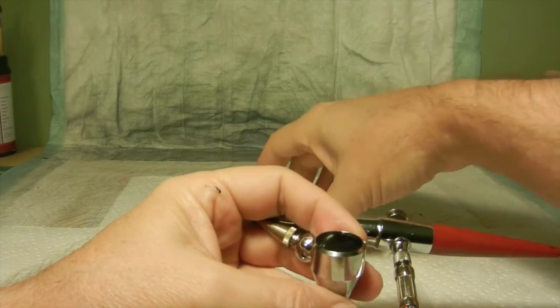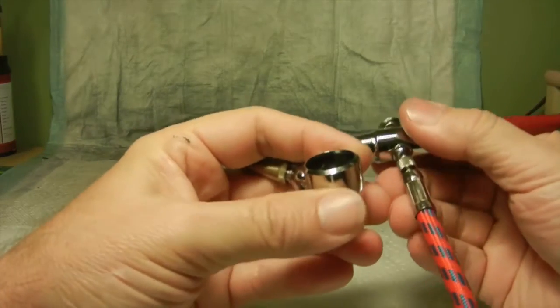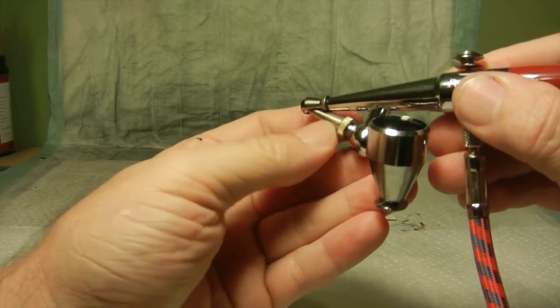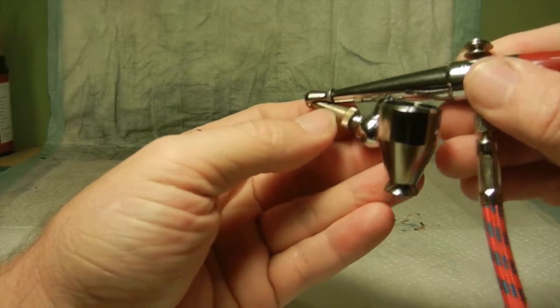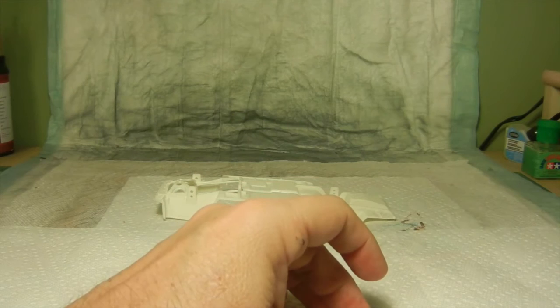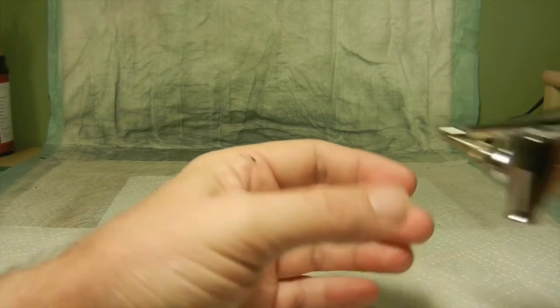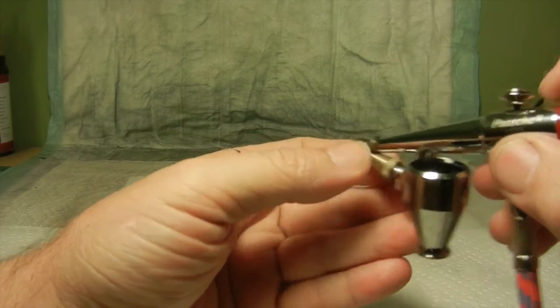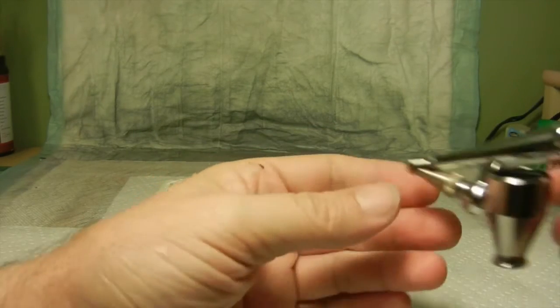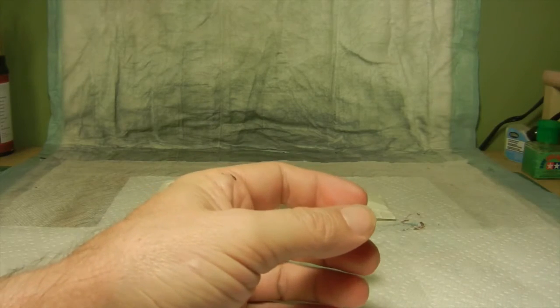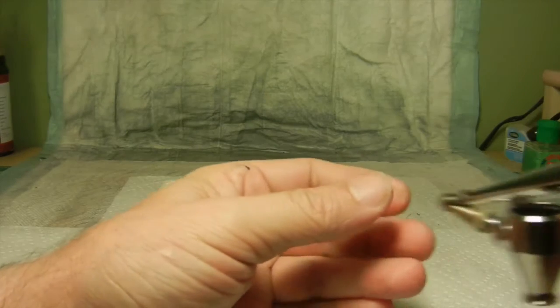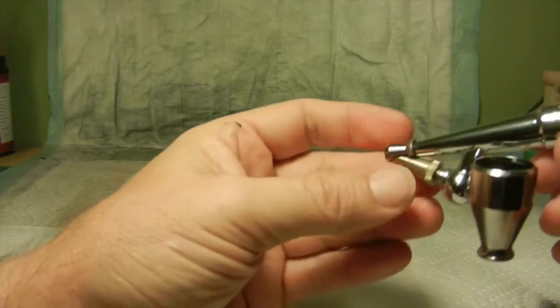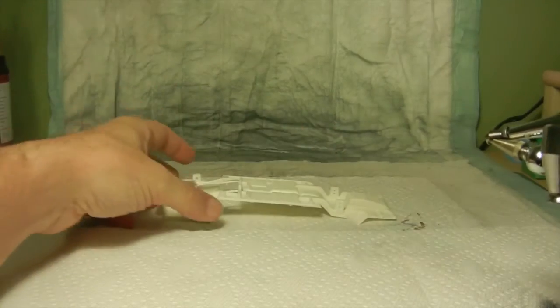So let's go ahead and give her a shot. Go ahead and do a little bit of adjusting with the nozzle and open her up a little bit just to get the paint flowing. Sorry about the noise, that's just the pressure cutting in. There you go. Alright. So let's go ahead and get her started.